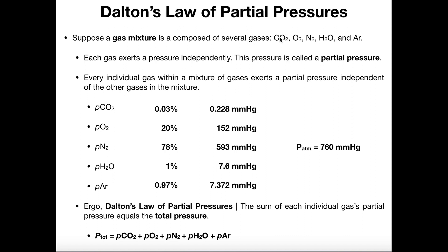It's the same kind of thing here. Even though we have a gas mixture containing these five gases, each one individually is going to exert its own pressure. These pressures of individual gases are what we call partial pressures — they're partial because it's not the pressure of the whole gas, just the pressure from one gas in the mixture. If we wanted to talk about just the pressure exerted by carbon dioxide, we use a lowercase p in front: pCO2. Whenever you see this lowercase p, that implies we're talking about a partial pressure. So we can have pCO2, pO2, pN2, pH2O, and pArgon.